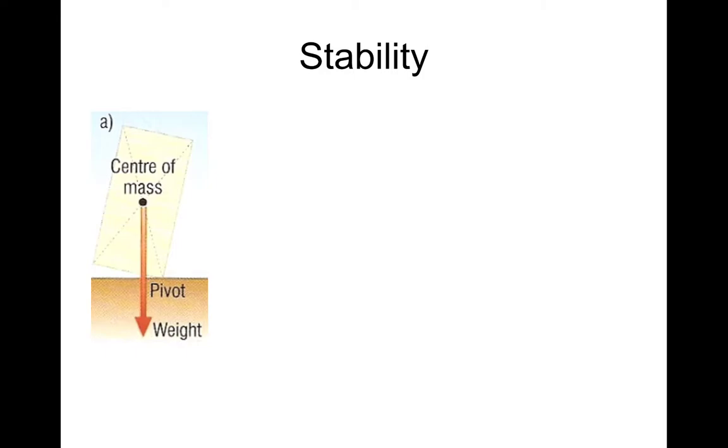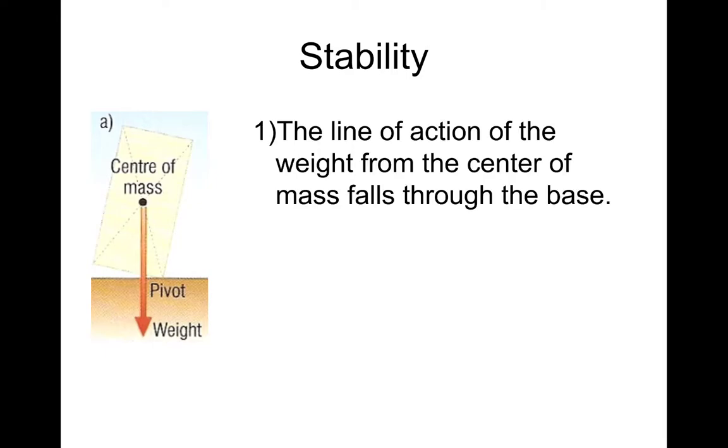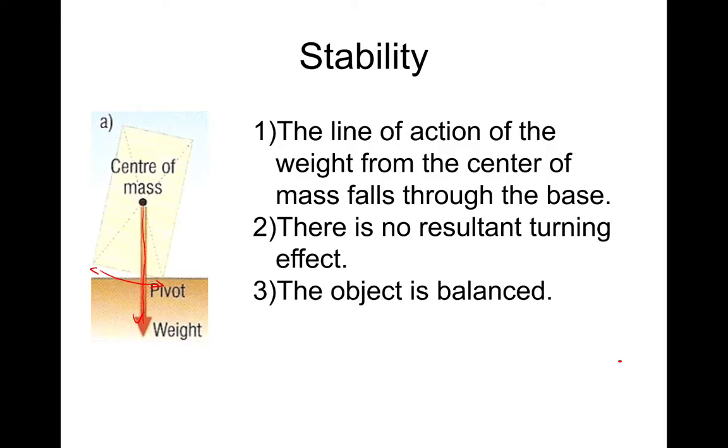So if you get something like this, so you could get something like this in your exam and it would say explain what happens regarding its stability. And there's normally three points that you want to make and I'm going to share these with you. So on this one, as you can see, and this is how you would word it, the line of action of the weight from the centre of mass, you could say centre of gravity, falls through the base. So there's no resulting effect on this body. And the object is balanced, it would fall back down and be stable.